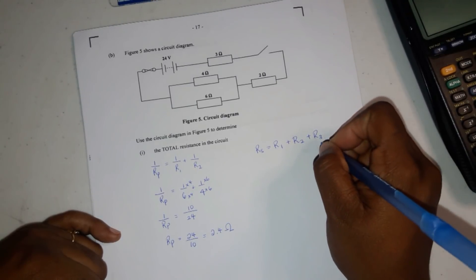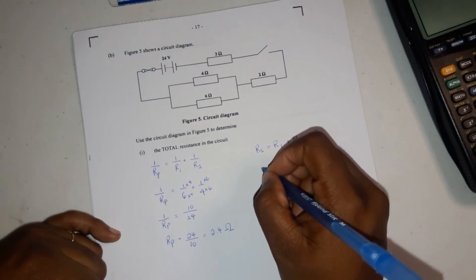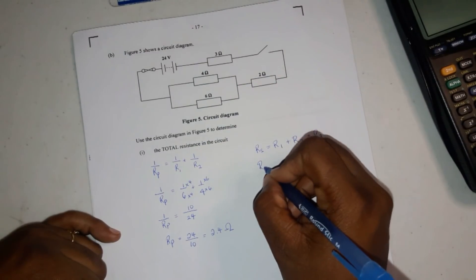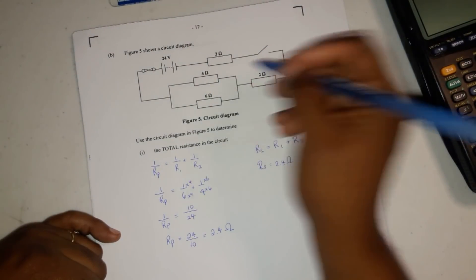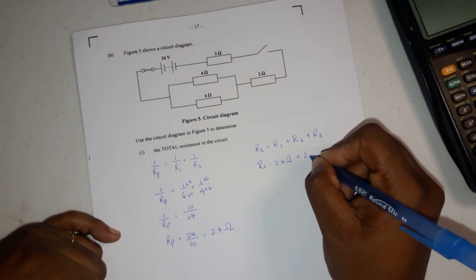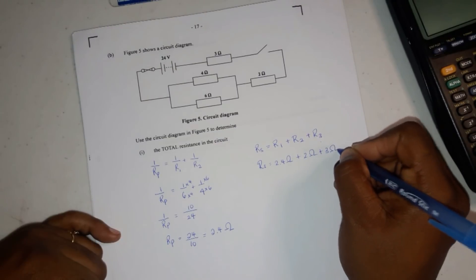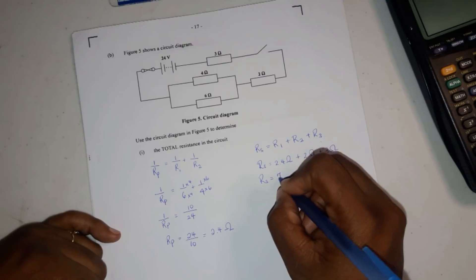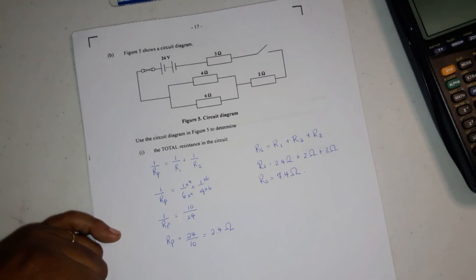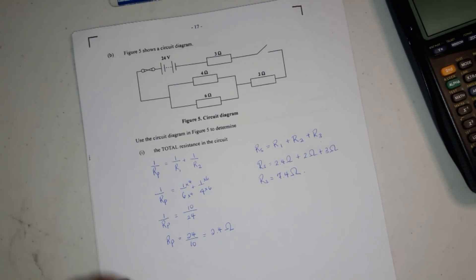This, now, you could substitute it in for R3 and add the other 2. Or you could make it R1, whatever you want. So I would use 2.4 as R1. This could be 1. And then you add 2, and then 3. And Rs would give you 7.4 ohms. Okay? So that's the answer for that one.